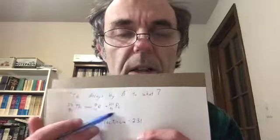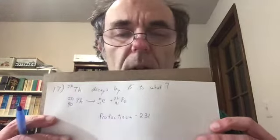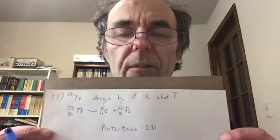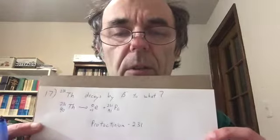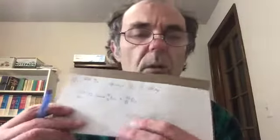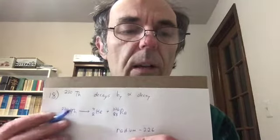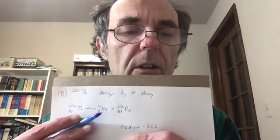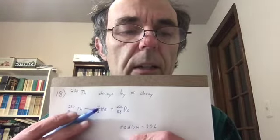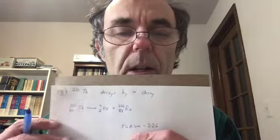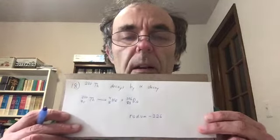Problem eighteen: Thorium-230 decays by alpha decay. Thorium is element 90. An alpha particle is helium-4 (Z=2, A=4). Conservation: Z goes from 90 to 88, A from 230 to 226. Element 88 is radium, so the product is radium-226. Be comfortable using the appendix to find element names from atomic numbers.